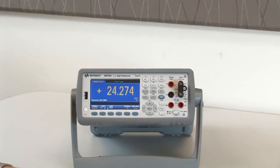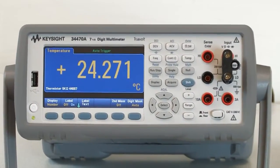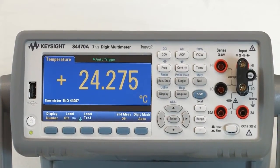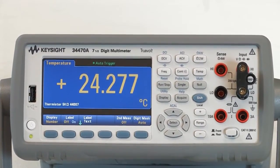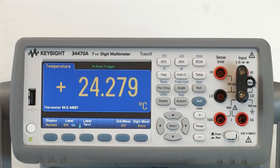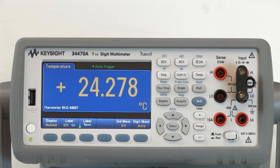Looking at the display of the DMM on the table here, you can see that we are currently making a temperature measurement. One of the secondary measurements available with temperature measurements is the ability to measure the actual temperature or the resistance of the sensor itself.